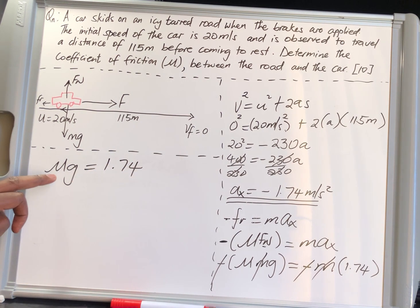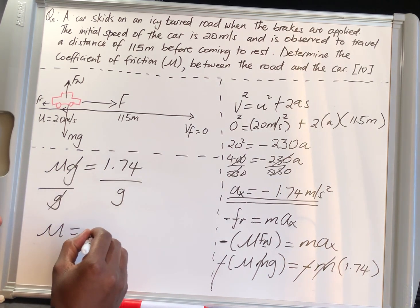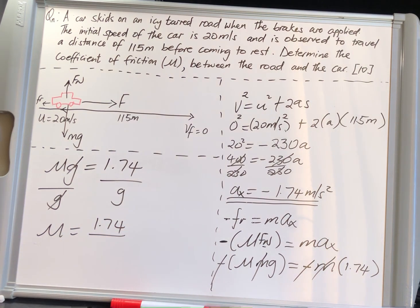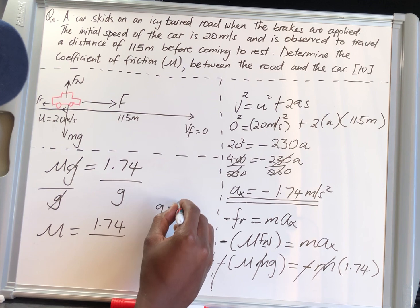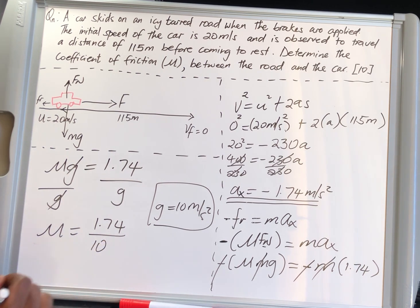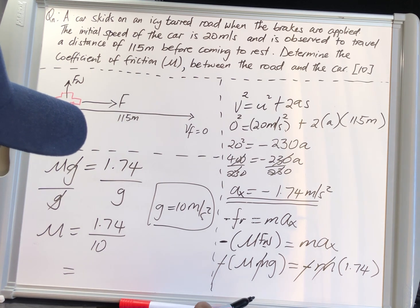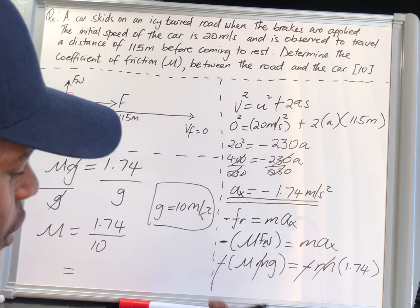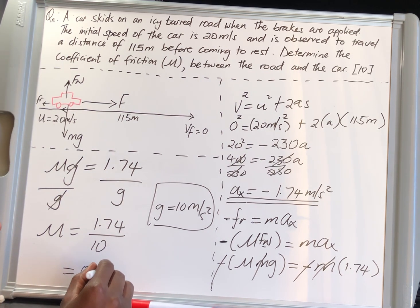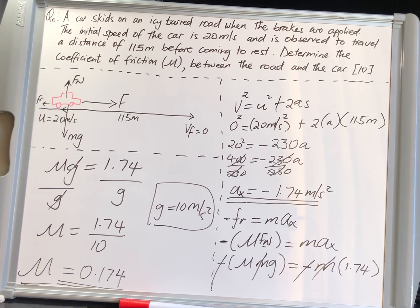The question asks us to calculate mu, so we make mu the subject by dividing both sides by g. Using g as 10 meters per second squared, we get: μ = 1.74 divided by 10, which equals 0.174. This is your coefficient of friction, which is what the question is asking you to find. Thank you.